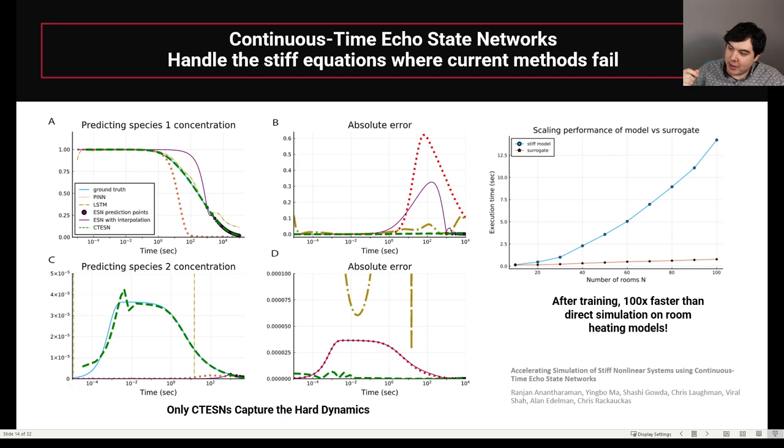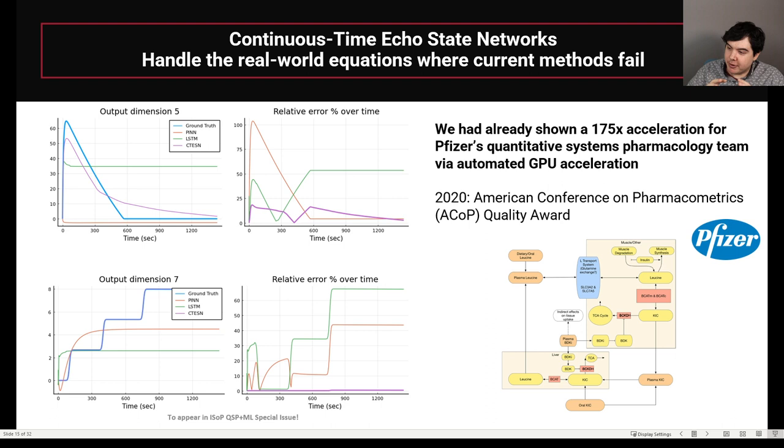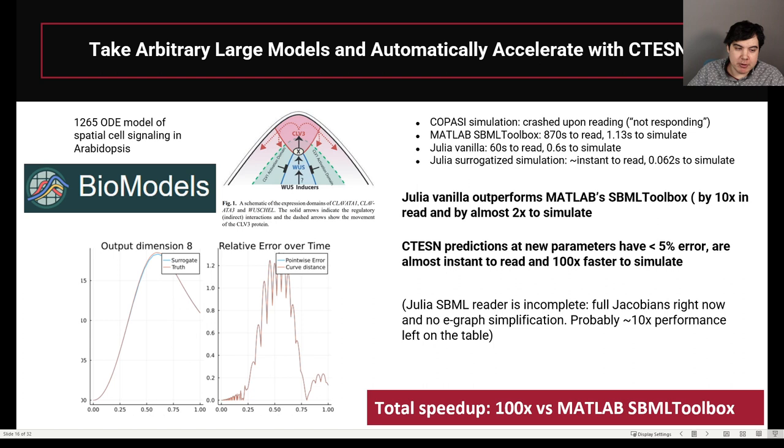We also tried this on other difficult models. The project that we did with Pfizer, this is a problem that most ODE solvers once again failed. We asked, what happens if we try the continuous-time echo-state network here? It turns out that you get a similar result that most machine learning methods fail to train on this problem. But you are able to get accurate predictions with the continuous-time echo-state network. What happens if you take the continuous-time echo-state network to very large differential equation models? We took it to one of these 1,200-equation biomodels of the Weilscher gene, and we saw that we were able to get about 100 times speed-up over the MATLAB SPML toolbox. Actually, these results improved quite a bit before the final result. I think the final result ended up being about a 20,000x speed-up by using just a different ODE solver within the reservoir. This slide needs an update, but the results on the biomodels are going to be published soon.